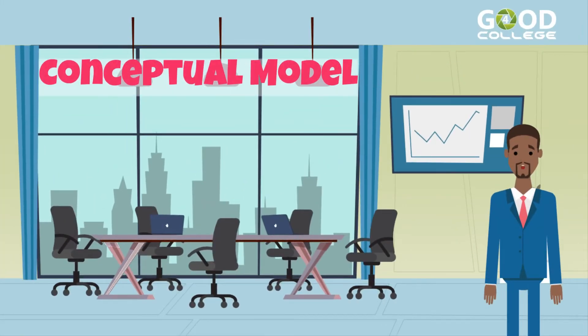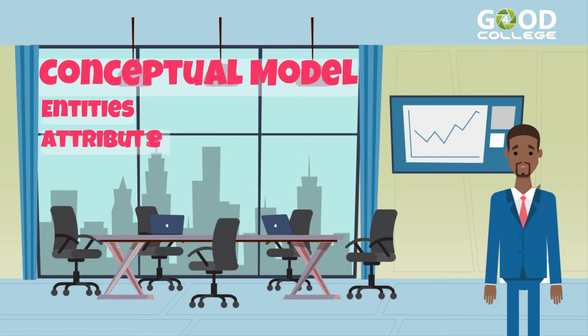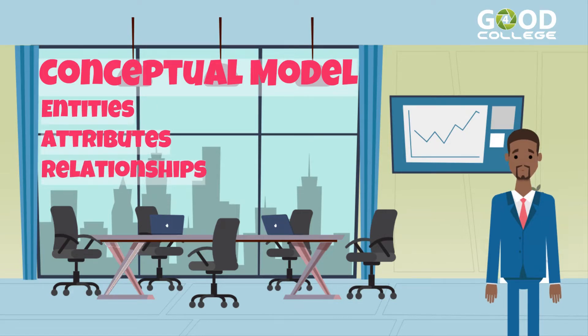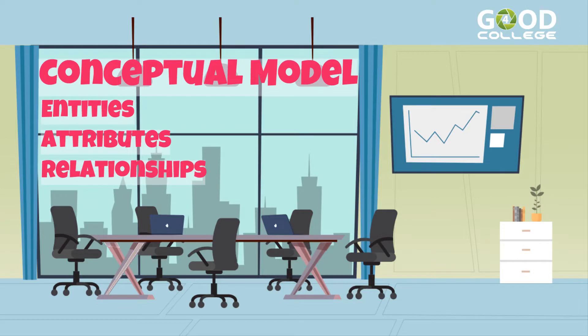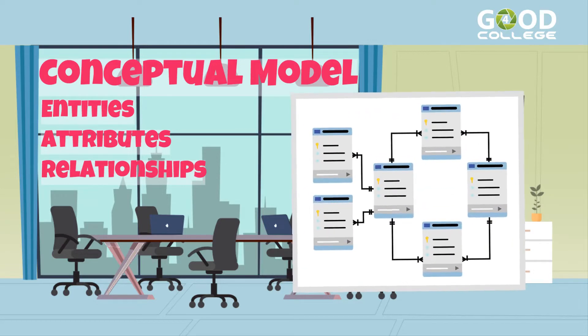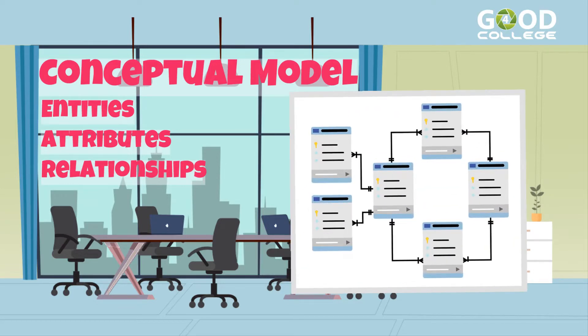The conceptual model is made up of three elements: Entities, Attributes, and Relationships. These three elements will be used later to draw a conceptual model diagram.